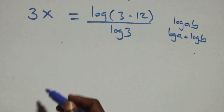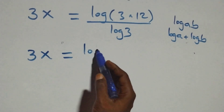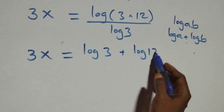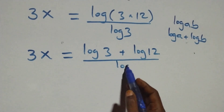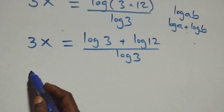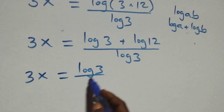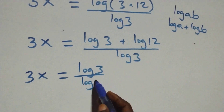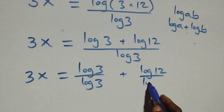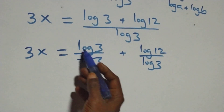So what we have becomes 3x equals log 3 plus log 12 over log 3. We then separate this into two fractions: 3x equals log 3 over log 3 plus log 12 over log 3. The log 3 over log 3 cancels to give 1.